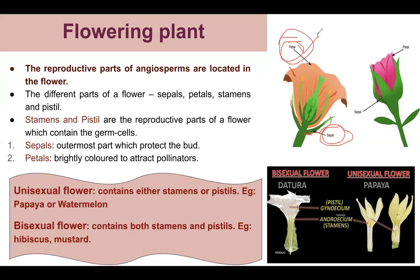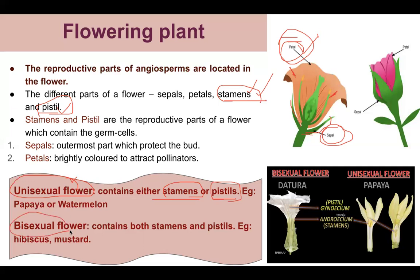Inside the flower, there are two other things: one is stamen and one is pistil — these are the two reproductive parts. Stamen is the male reproductive part; the pistil is the female reproductive part. So a flower has four main parts: outermost green sepal, colored petal, stamen inside, and pistil. A unisexual flower has either stamen or pistil — only one sex organ. A bisexual flower has both male and female parts.